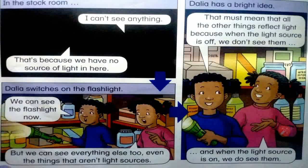Now they put off the light in the first scene — I can't see anything. That's because we have no source of light in here. Now they put on the source of light; we can see the flashlight, and we can see everything else too, even the things that aren't light sources. Now the light is on — we can see the rubber, the bulb, the paint cup, and a lot of things. That's because these materials reflect the light.